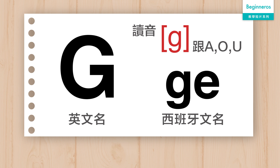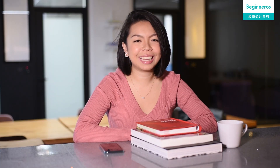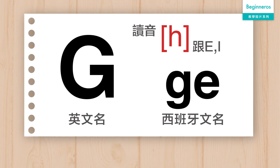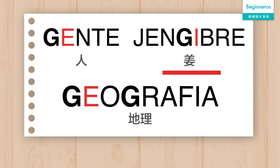如果 G 後面的是 A, O 或者 U，它的發音就像英文的 Good 一樣。For example, Gato, Goma. If G is followed by E or I, it will be like H. For example, Gente, Jengibre, Geografia.